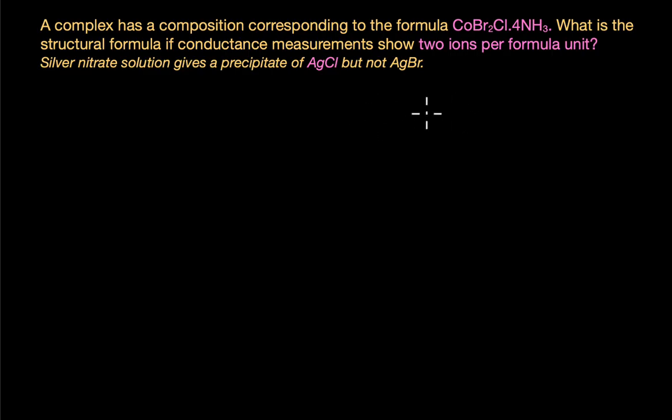Without any delay, let's look at the question. The question says a complex has a composition corresponding to the formula CoBr₂Cl·4NH₃. What is the structural formula if conductance measurements show two ions per formula unit? We also have extra information: silver nitrate solution gives a precipitate of AgCl but not AgBr.